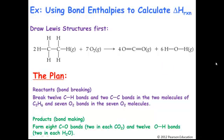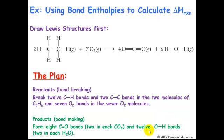Now let's break all of the bonds. We're going to break 12 carbon-hydrogen bonds — that's six per molecule times a stoichiometric coefficient of two. We're going to break two carbon-carbon bonds, since there's one per molecule with a coefficient of two. And we're going to break seven moles worth of O2 bonds. That gives us a large positive number.